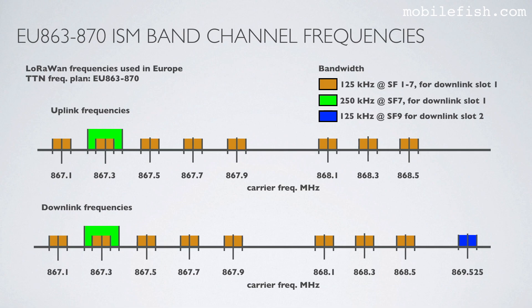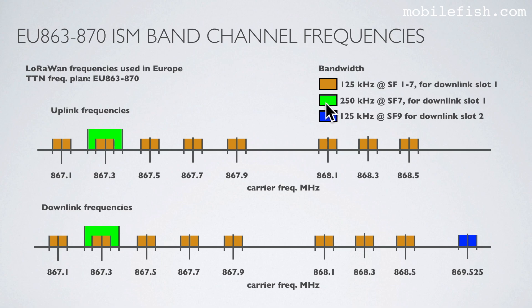In this picture you see the LoRaWAN frequencies used in Europe based on the Things Network frequency plan EU863-870. Here are the 8 upload frequencies and the 8 download frequencies to be used for slot 1, plus an additional download frequency for slot 2. The orange and blue colors represent the 125 KHz bandwidth and the green color represents the 250 KHz bandwidth. The 250 KHz bandwidth is only used at one frequency; all others use the 125 KHz bandwidth.